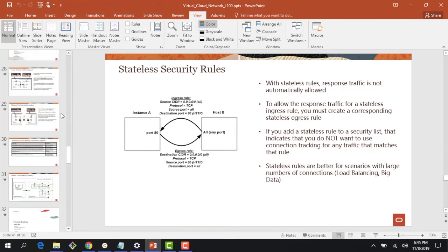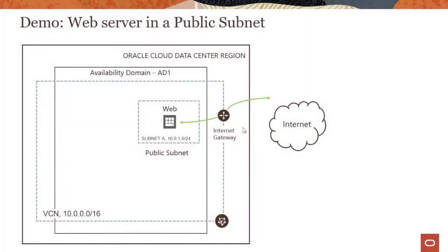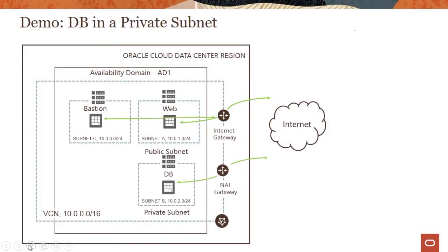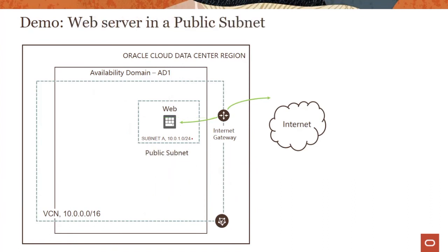Going back to the slides: my internet gateway is there, the instance has a public IP, so I can bring it up in the browser. But because port 80 is not open in the security list, I cannot get the traffic in. Really straightforward — nothing complex.